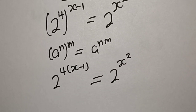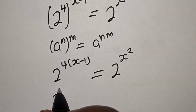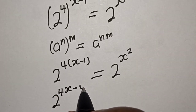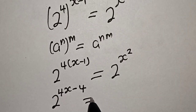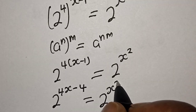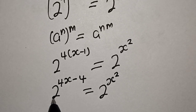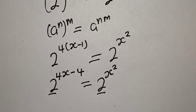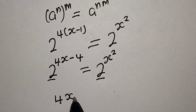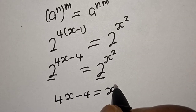This is 2 raised to power 4 times x, which is 4x minus 4 times 1, so 4x minus 4, equal to 2 raised to power x squared. Now they have the same base — base 2 on both sides. So we have 4x minus 4 is equal to x squared.